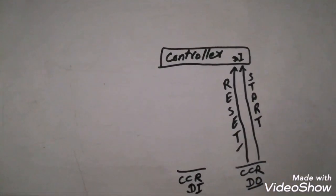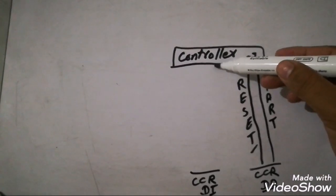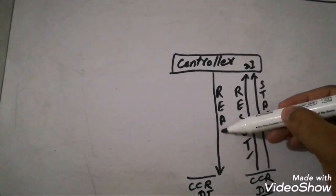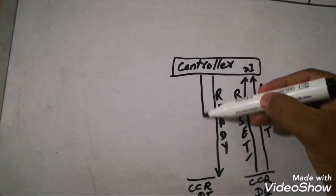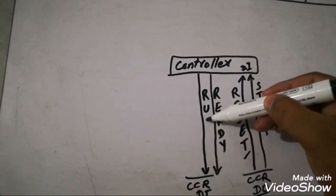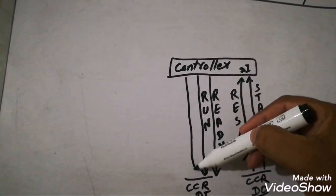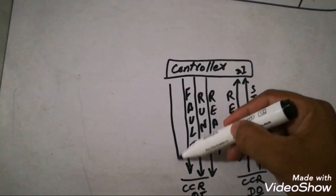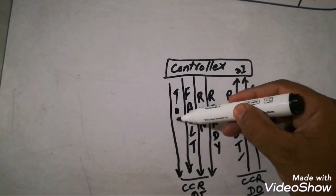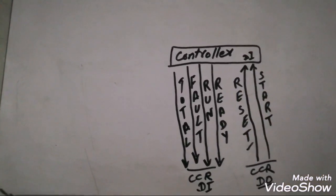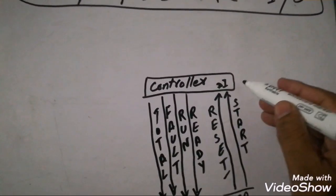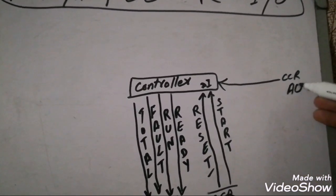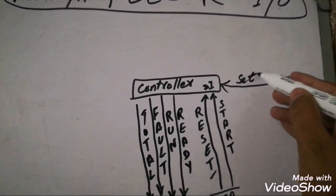The CCR digital inputs from the controller include: a ready signal indicating everything is okay and the wave feeder is ready; a run feedback to show the operator the wave feeder is running; a fault digital output generated by the controller in case of any fault; and a totalizer pulse — for each ton or kg as per configuration, the controller generates a pulse to show one ton has passed.